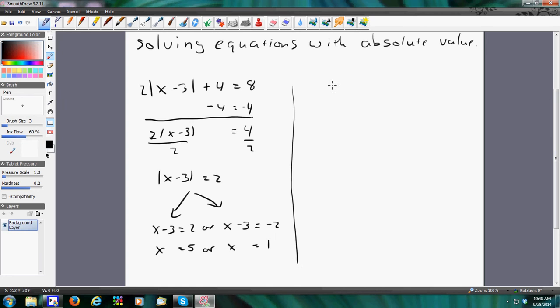There is one other thing I want to show you. If you should happen to have something like this, the absolute value of x minus 3 equals negative 5. Well, you might say, okay, x minus 3 equals negative 5, or x minus 3 equals positive 5.